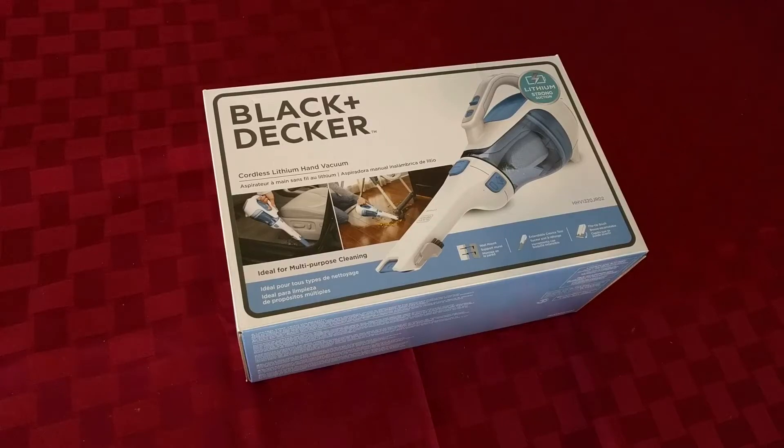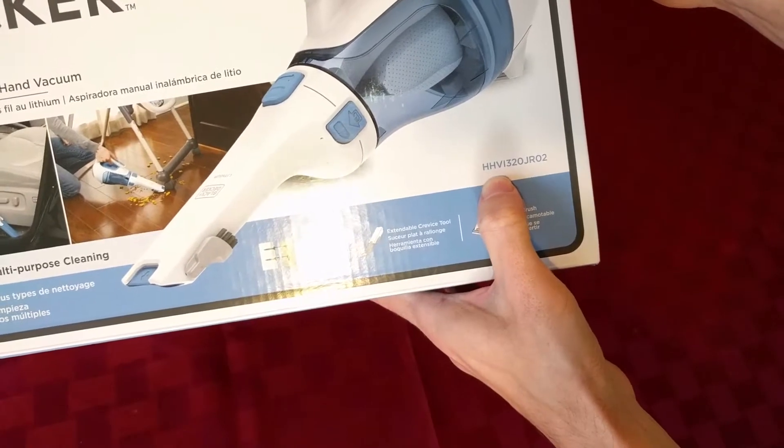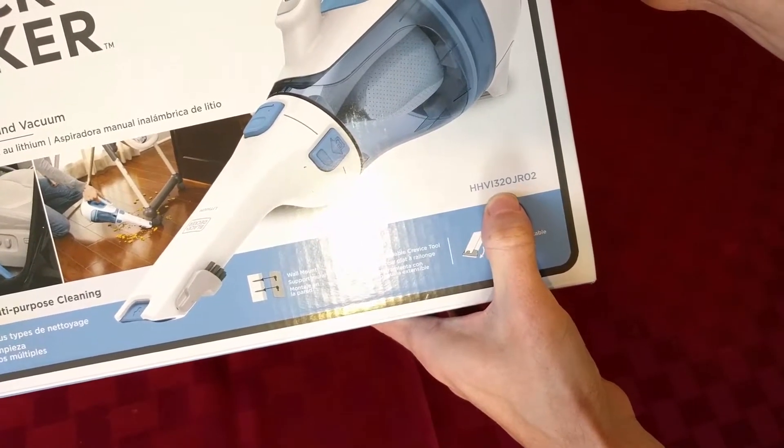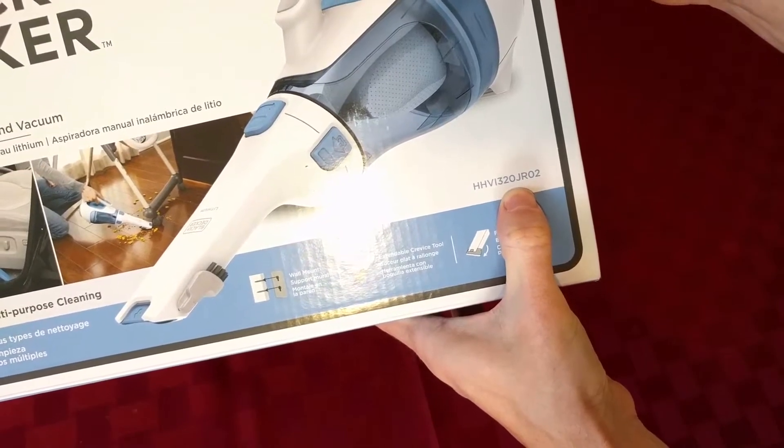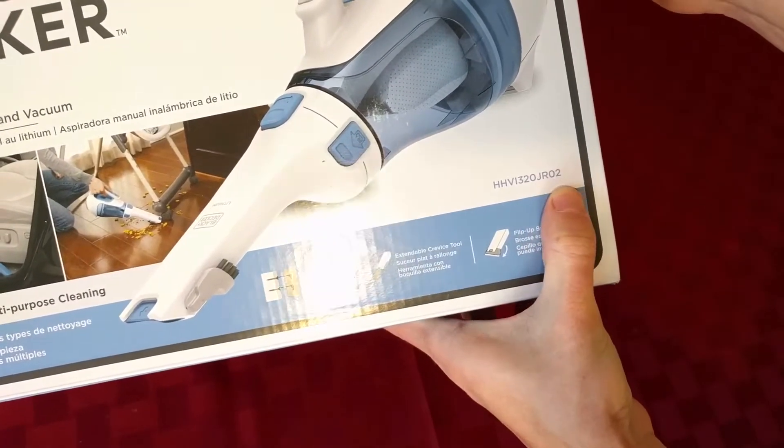This is the unboxing of the Black & Decker. H-H-V-I? I think that's an I versus a one. Three, two, ooh is that an O or a zero? I'm gonna say an O. J-R-O-2.